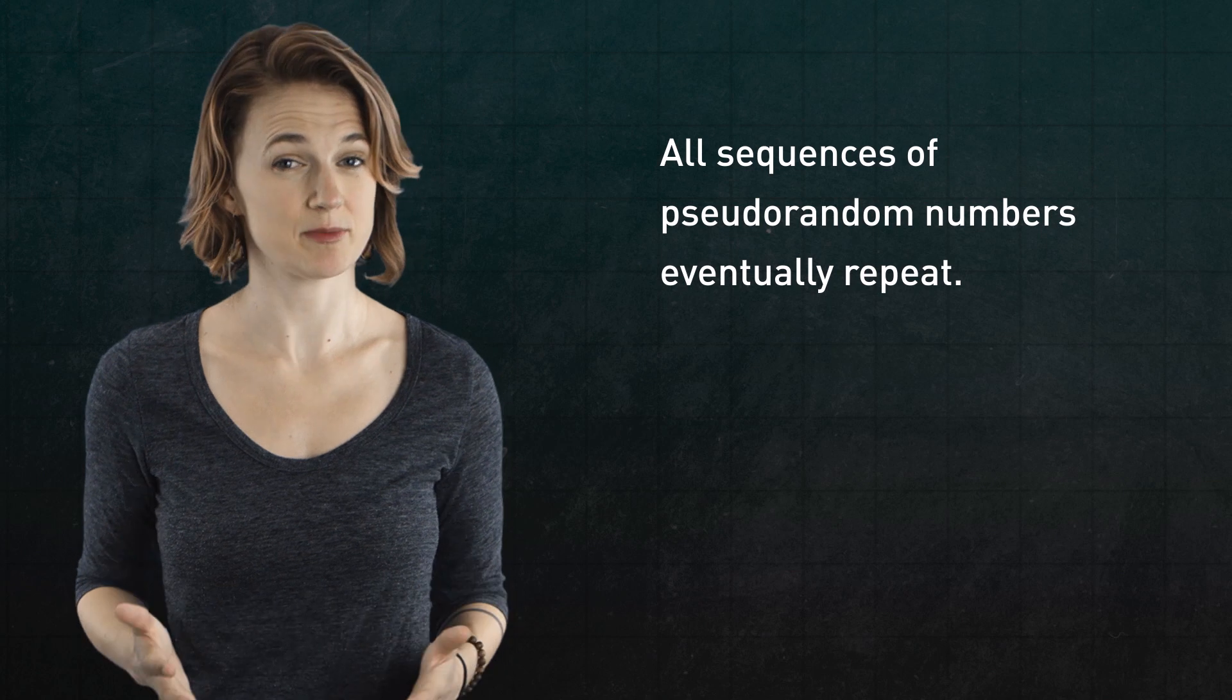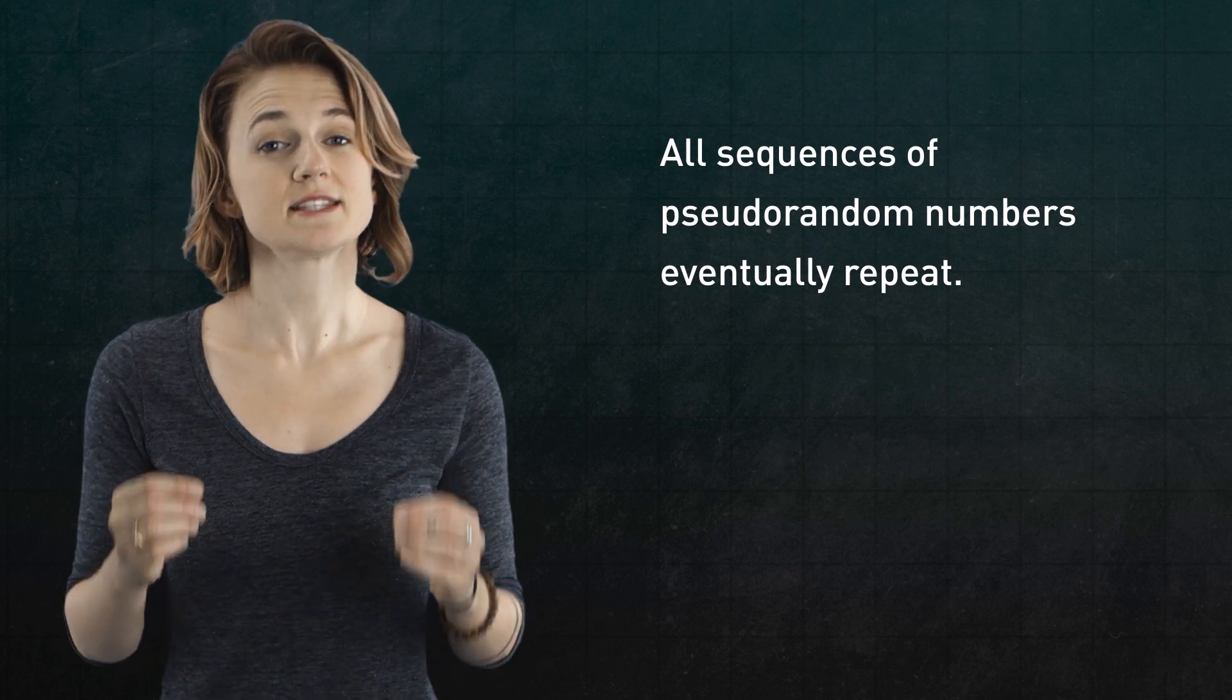For example, something that would make a sequence seem less random is if the same pattern of numbers kept showing up. Well, all sequences of pseudorandom numbers eventually repeat. In other words, the sequence cycles.